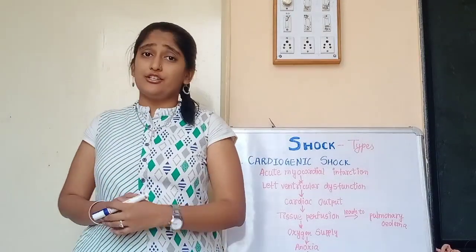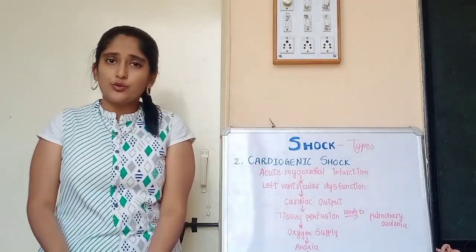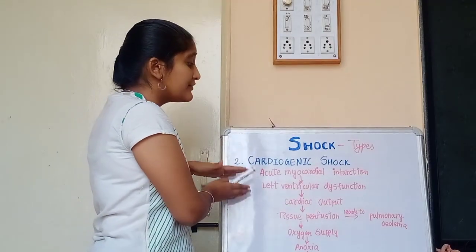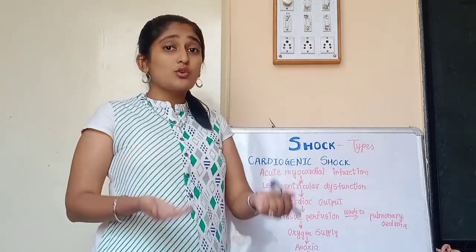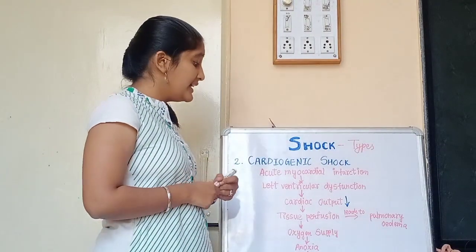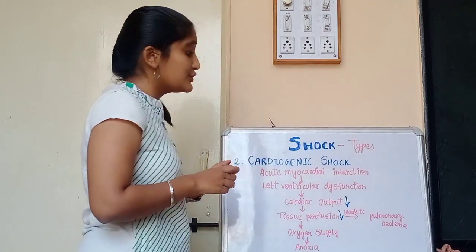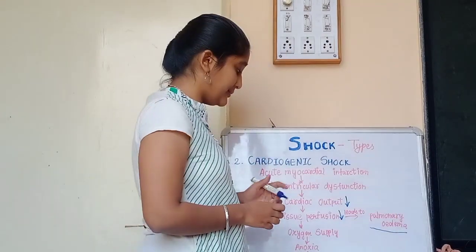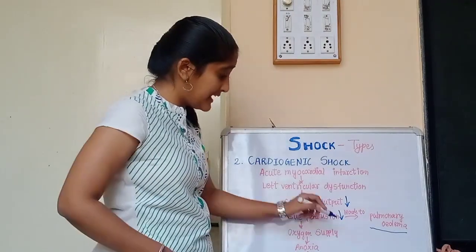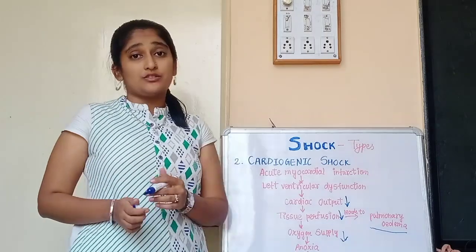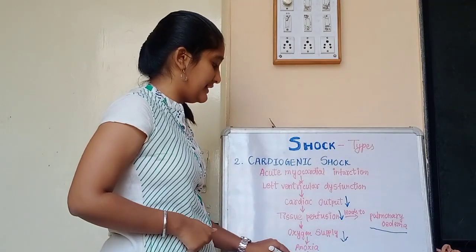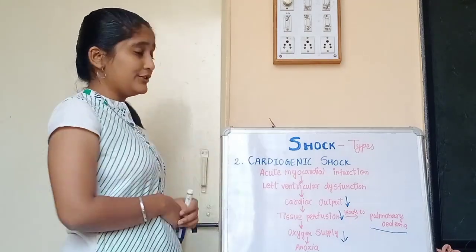In cardiogenic shock, acute myocardial infarction leads to left ventricular dysfunction, which causes decreased cardiac output. Decreased cardiac output leads to decreased tissue perfusion, which may cause pulmonary edema. Reduced oxygen supply to tissues leads to anoxia, triggering an inflammatory response, which may result in shock.